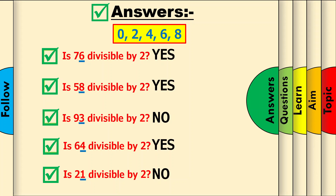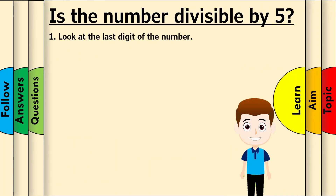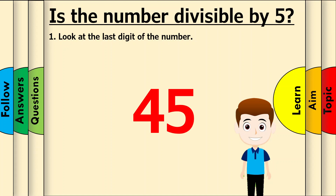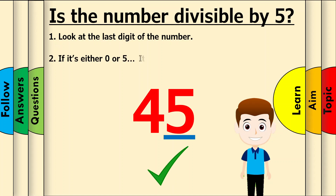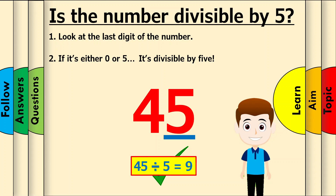Is the number divisible by 5? First, look at the last digit of the number. Let's take 45 for example. In this case, the last digit is 5. If this digit is either 0 or 5 — which it is — it's divisible by 5. Let's just check by doing 45 divided by 5, which is the whole number 9.